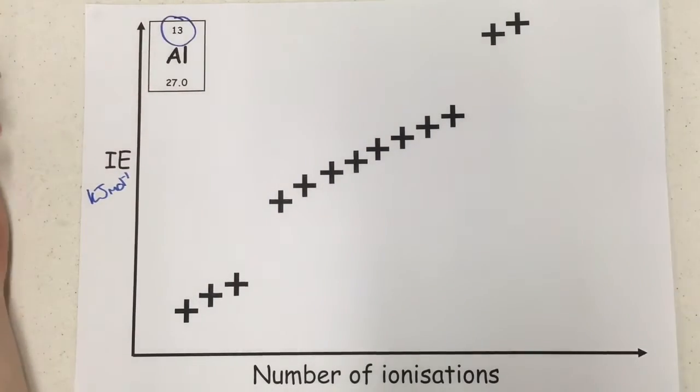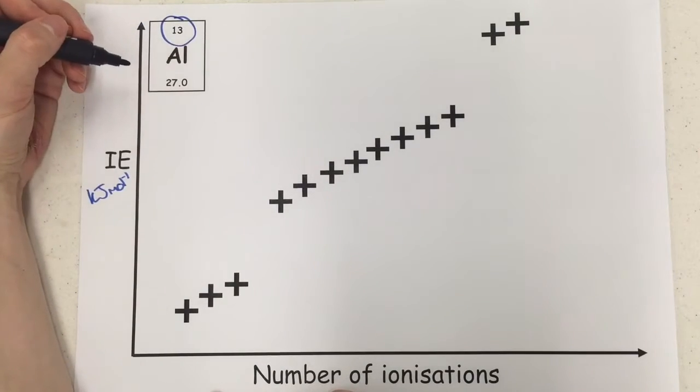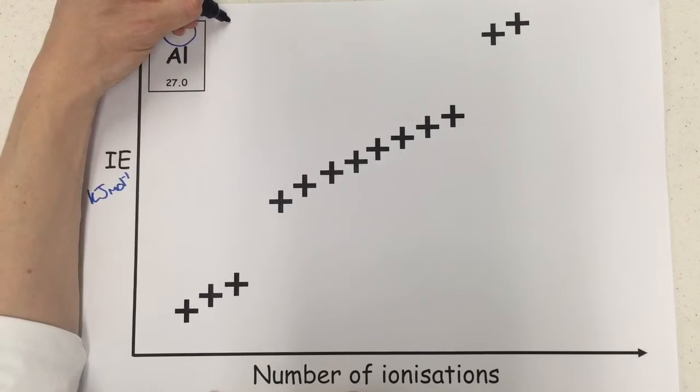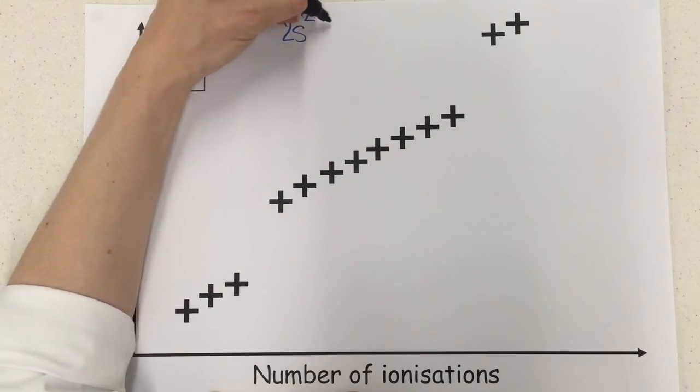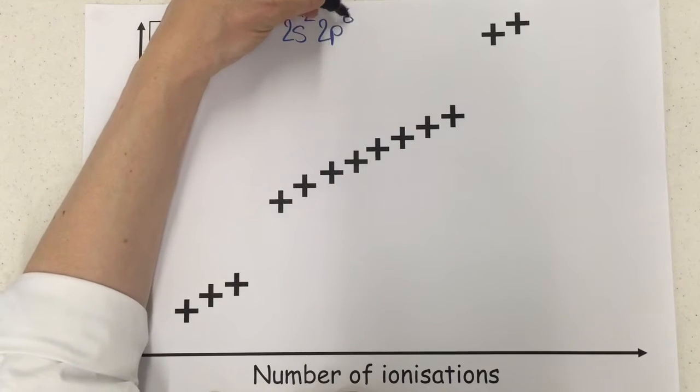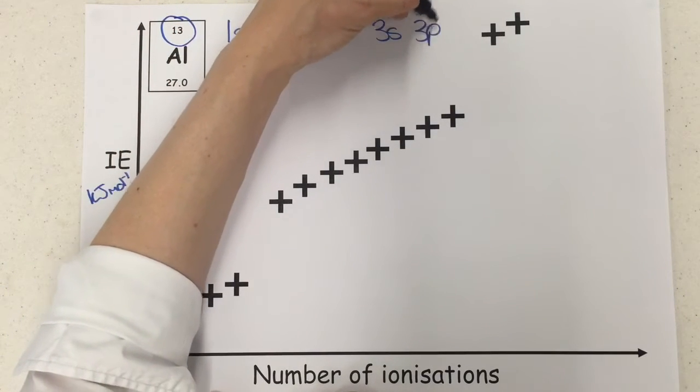Now as you can see, aluminum has got 13 electrons, this is the proton number, but we're assuming it's for the neutral element, we would have 13 electrons as well, and so the electron configuration would be 1s2, 2s2, 2p6, 3s2, 3p1.